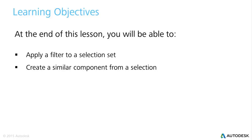Now let's look at the learning objectives for video two. In this exercise we will explore ways of accessing tools within Revit related to specific tasks through contextual ribbon tabs. We will look at two specific examples. The first is applying a filter to an existing selection set for model based objects, and the second is creating a similar model based component from an existing selection set. Let's get started.